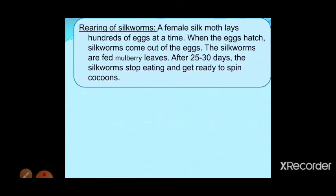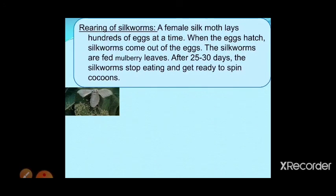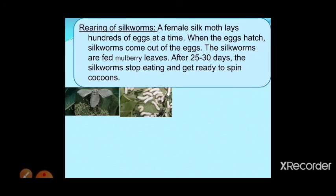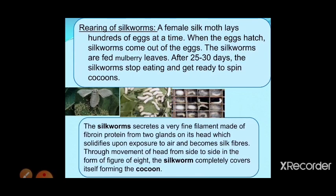In rearing of silkworm, the female moth lays hundreds of eggs at a time. When the eggs hatch, the silkworms come out and start eating mulberry leaves. They eat mulberry leaves for about 25 to 30 days. After they stop eating, they are ready to spin the cocoon.